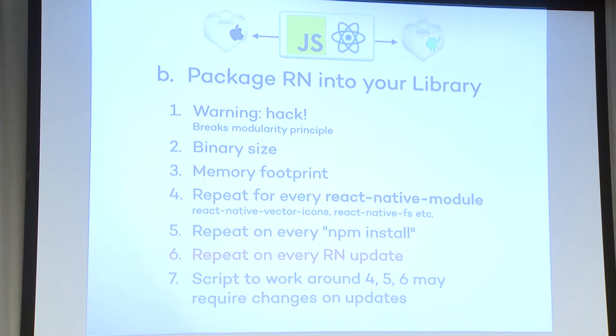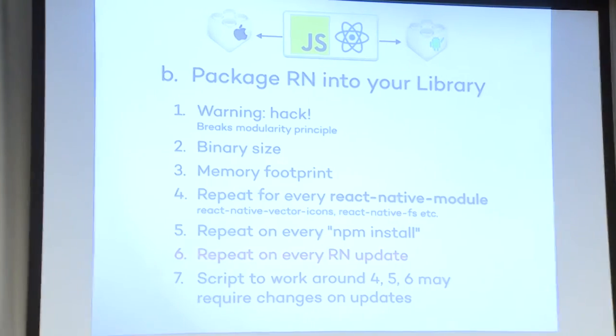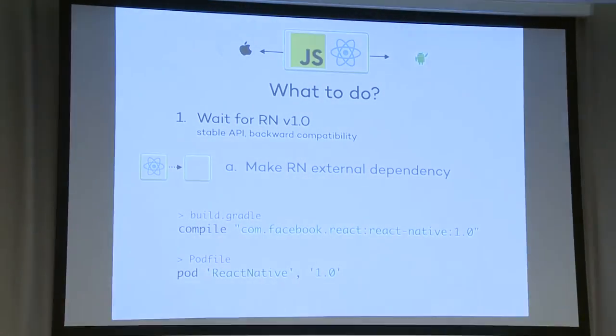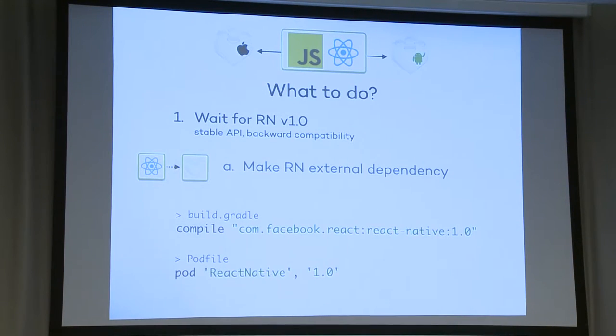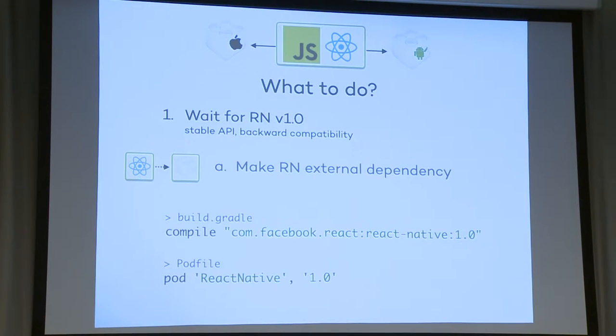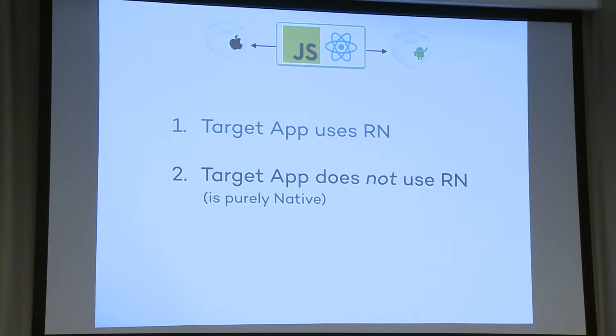If you try to automate it with a script to work around these problems, you may succeed, but it may also require changes on React Native updates. So what do we do? We wait for React Native version 1.0, meaning we can then apply approach A — just give it to the dependency manager to resolve dependencies, say compile React Native version 1.0, and everybody's happy. Bad news: there is no roadmap for React Native versions, so nobody knows when 1.0 will be released or how backward compatible it will be.